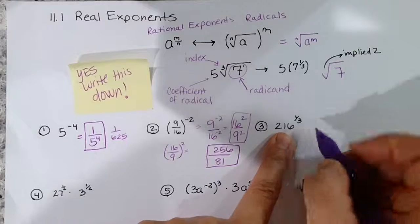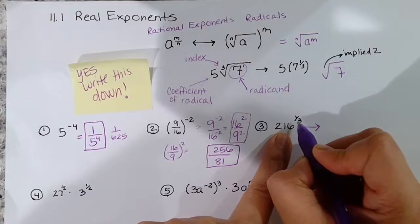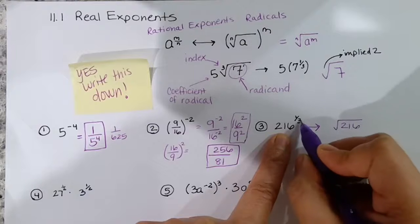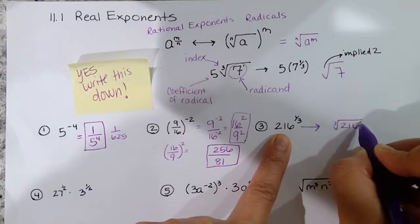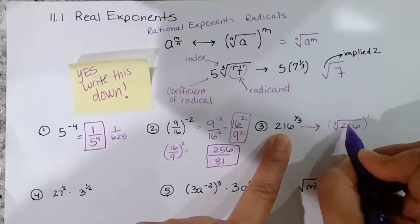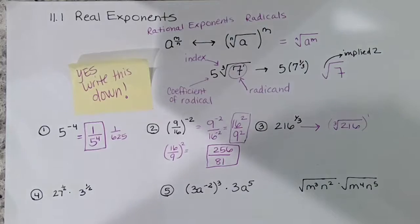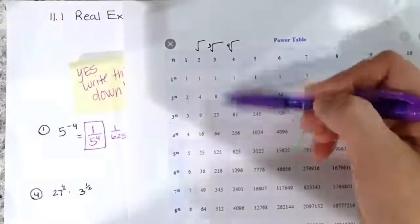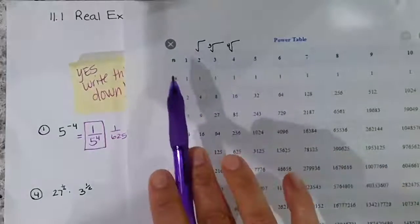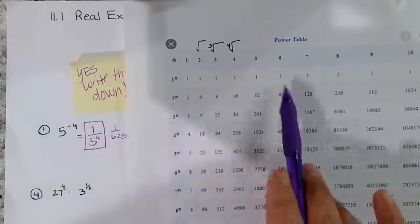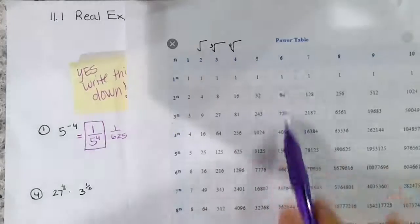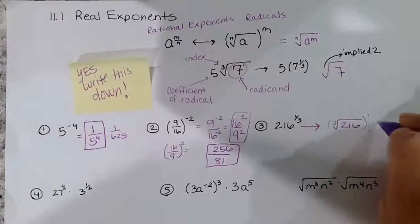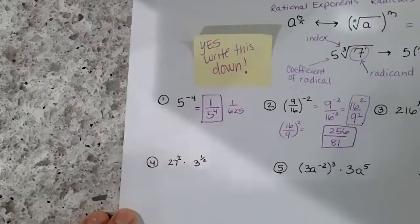This problem asks us to change from rational exponents to radical form. We have 216 to the one-third: the 3 becomes the index number and it's raised to the first power. Now I need to find the third root of 216. Looking at the table — the third root of 216 is 6. The table gives square roots, fourth roots, fifth roots, and sixth roots of various numbers, so we can look up the third root of 216 and get 6.